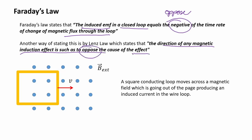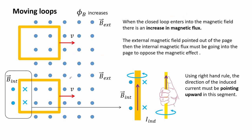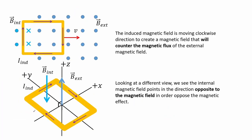A square conducting loop moves across a magnetic field going out of the page. We determine the direction of the induced current, which will produce an internal magnetic field that will oppose the rate of change of magnetic flux. When the closed loop enters into the magnetic field there is an increase in magnetic flux. The external magnetic field pointed out of the page, so the internal magnetic flux must be going into the page to oppose the magnetic effect. Using the right hand rule, the direction of the induced current must be pointing upward in this segment. The induced magnetic field is moving clockwise to counter the magnetic flux of the external magnetic field.